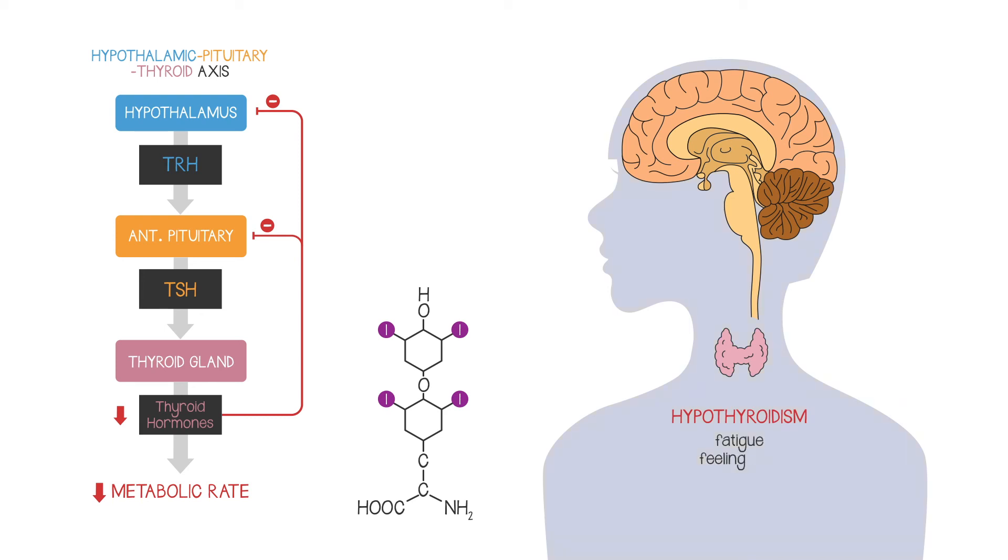You might feel tired and cold as your metabolic rate declines. But a knock-on effect will be that the negative feedback suppression exerted by thyroid hormone will be reduced, which means more TRH is produced from the hypothalamus and more TSH is produced from the anterior pituitary.